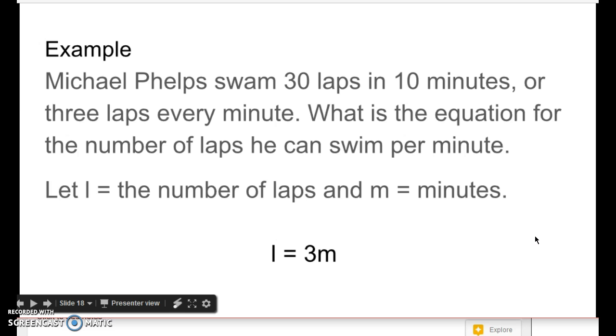So the laps is going to equal 3 times every minute. So if he swims for 1 minute, that's 3 laps. So 3 times 1 equals 3. If he swims for 2 minutes, that would be 3 and 3, that would be 6 laps. So 3 times 2 minutes equals 6. If he swims for 3 minutes, that would be 9 laps. So 3 times 3 is 9, equals 9 laps.